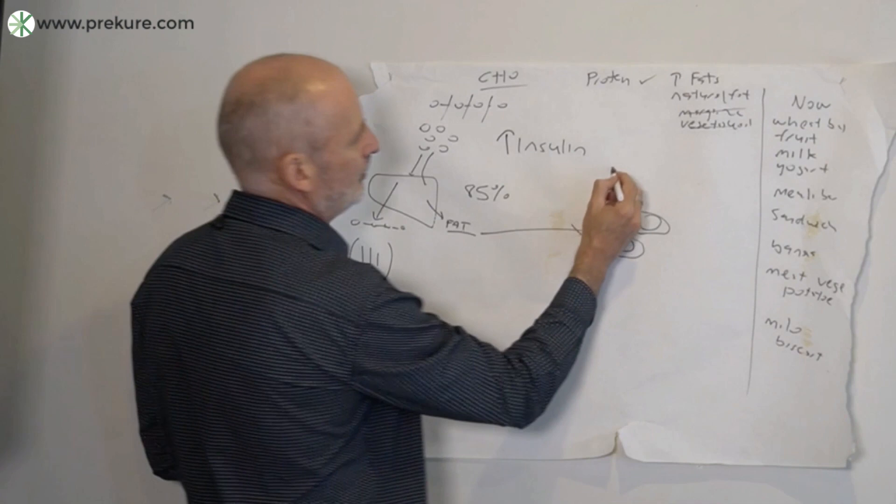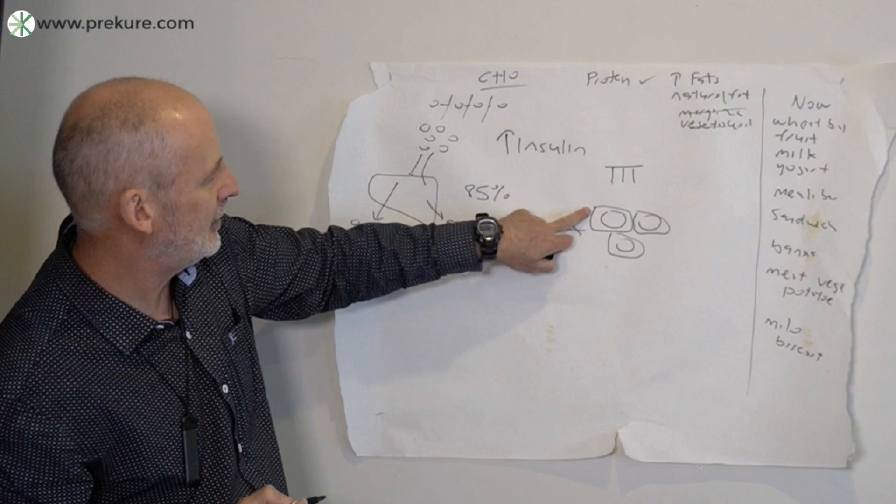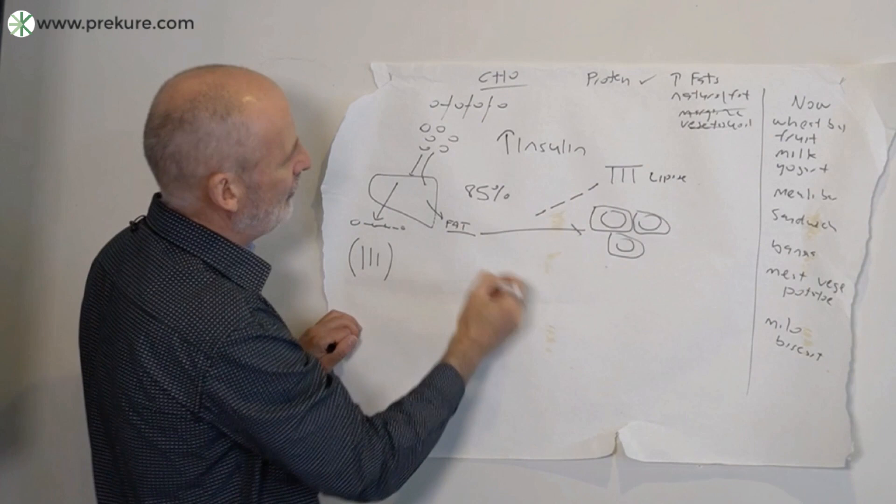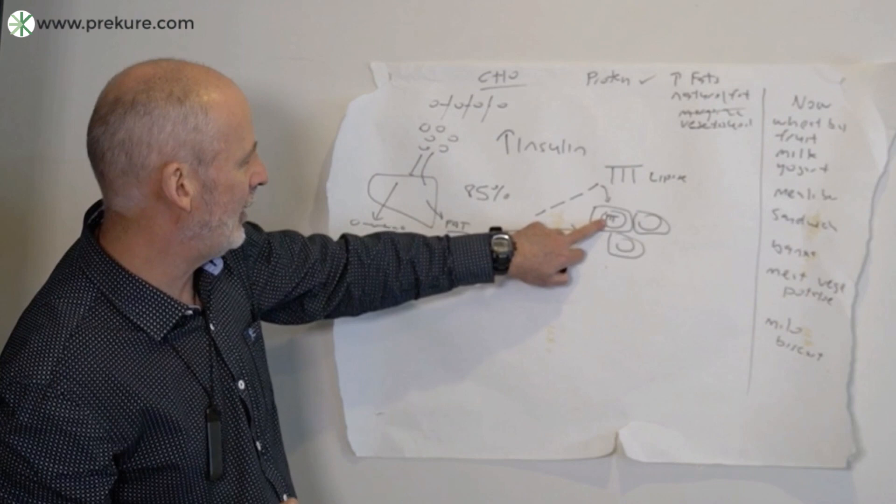And that's because your triglyceride is made up of a glycerol backbone and then there's three fatty acid chains that hang off it. And that's too big to get across the wall, so it gets broken down by an enzyme called lipase. Lipase breaks it down into the glycerol backbone and the three fatty acids, and then they can get into the cell. And inside the cell it gets formulated again back into a triglyceride.